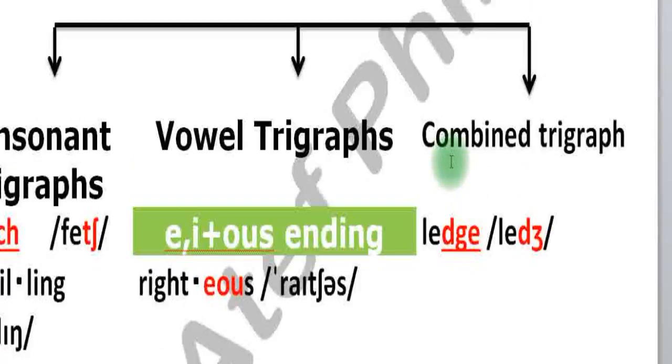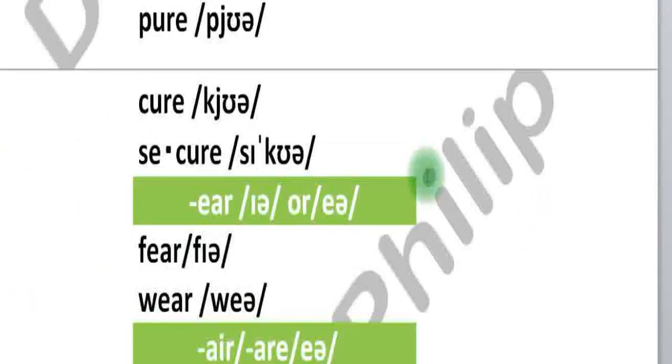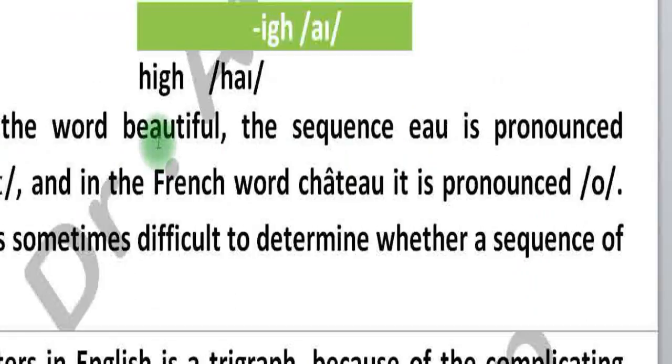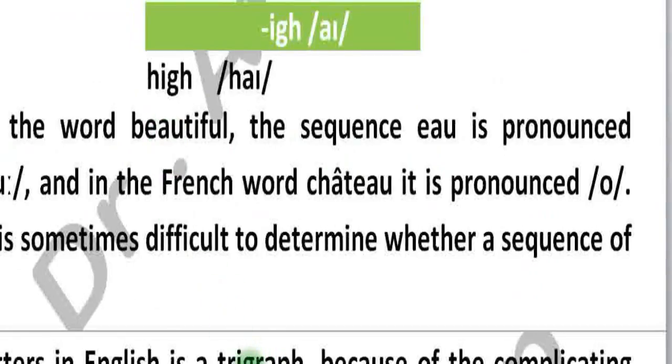As for the combined trigraph, here we have LIDGE. So D-G-E gives a single sound which is J, generally speaking.